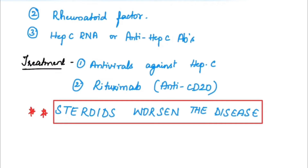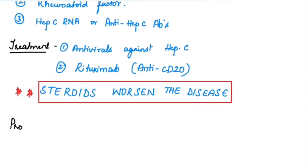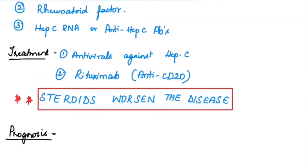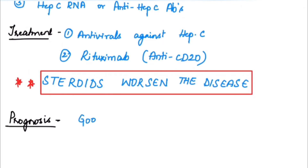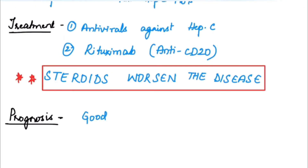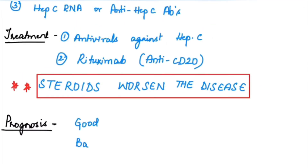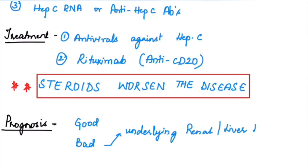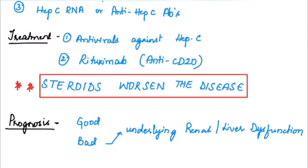The prognosis is usually good, but it is bad if the patient has underlying renal or liver dysfunction — for example, known CKD, CLD, or alcoholic liver disease. Similarly, progression to membranoproliferative glomerulonephritis indicates a bad prognosis.